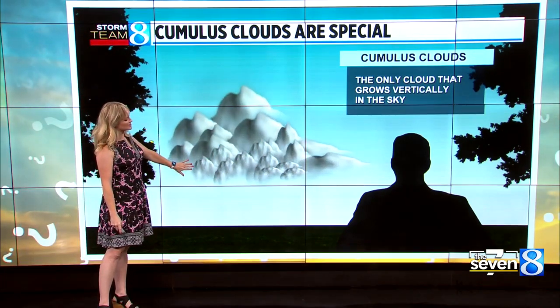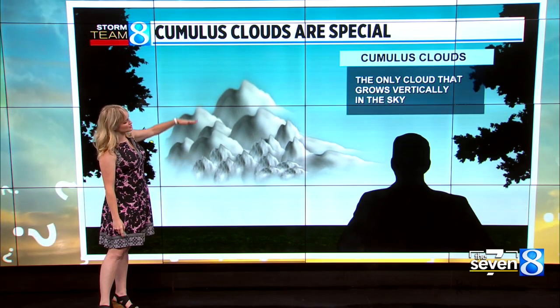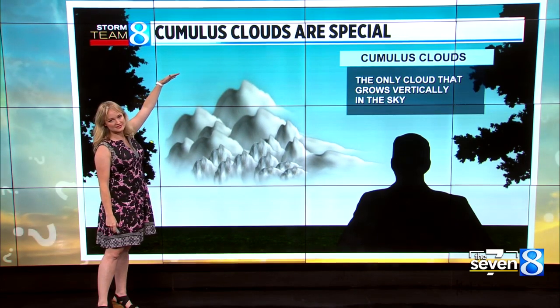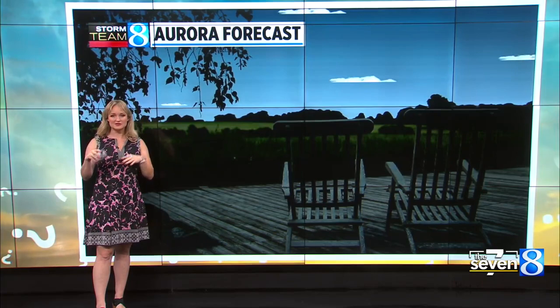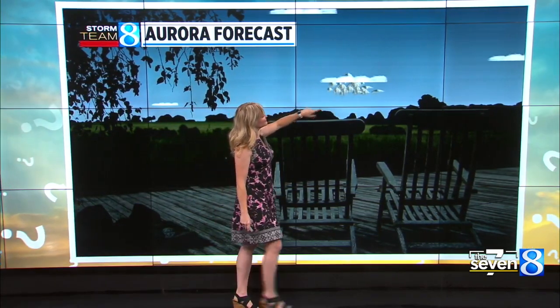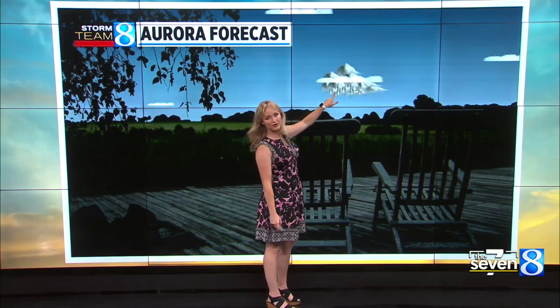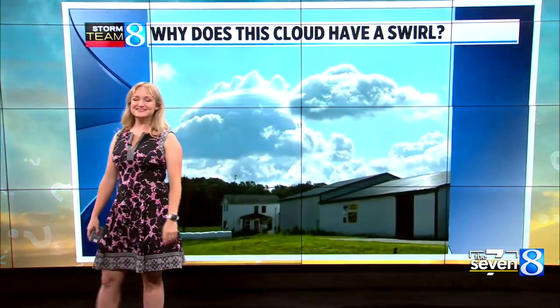So depending on where they start, they'll keep their bases there and then just continue to grow vertically into the sky. Sometimes you can see clouds at different levels. So let's say we have a beautiful day and you can see clouds already out there at a different layer. If you get a new cumulus cloud to form, it can push up on a second cloud.